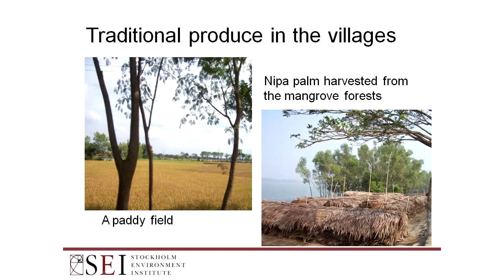World market demand and high prices for shrimps in export markets led new government policies to promote shrimp culture as a source of foreign exchange. Saline water shrimp production flourished, giving rise to a group of capitalist investors for export production. Smallholders were integrated in the system through leasing of their lands, and often, if land was denied, it was forcibly occupied. The profit was tremendously high from shrimps compared to paddy production alone.